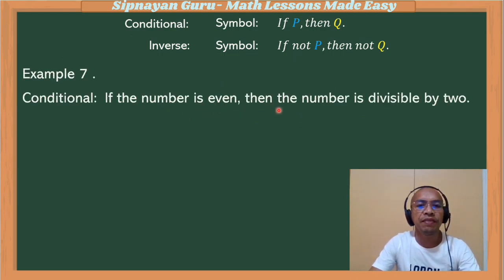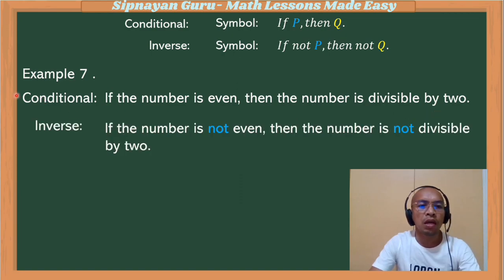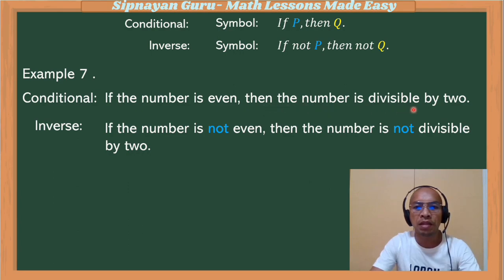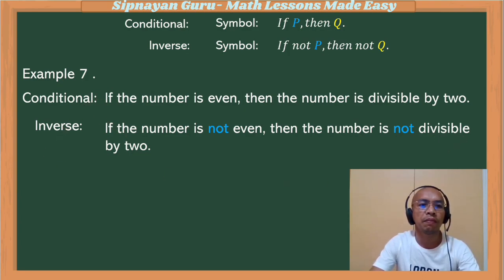Example number seven: if the number is even, then the number is divisible by two. In its inverse, we negate the hypothesis: the number is even becomes the number is not even. And we negate the conclusion: the number is divisible by two becomes the number is not divisible by two. So this is the inverse of this conditional statement.